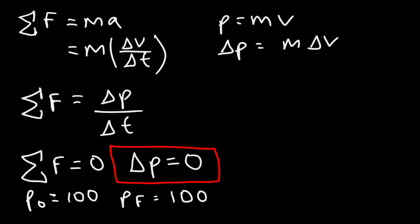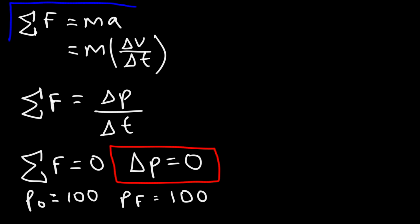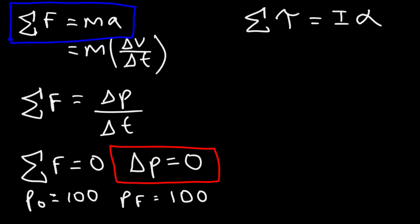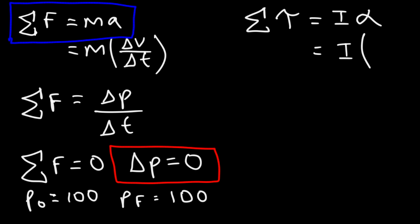Now let's create a similar situation with angular momentum. The rotational equivalent of force is torque, the rotational equivalent of mass is inertia, and the rotational equivalent of acceleration is angular acceleration, represented by the Greek symbol alpha. So the net torque acting on a rotational system is the product of inertia times its angular acceleration.